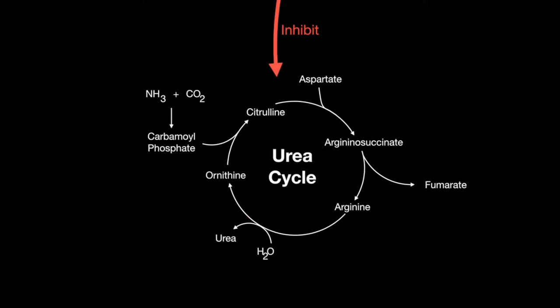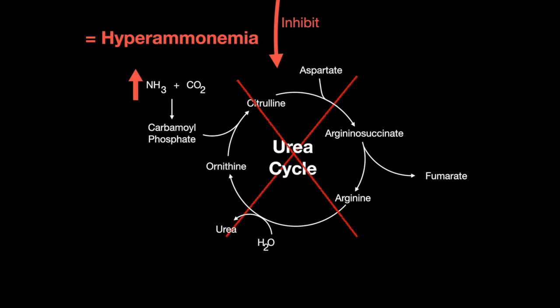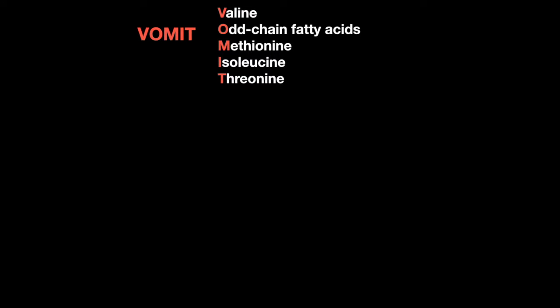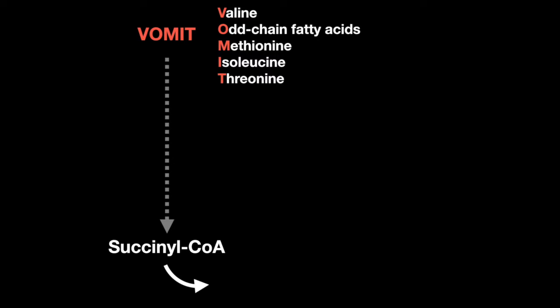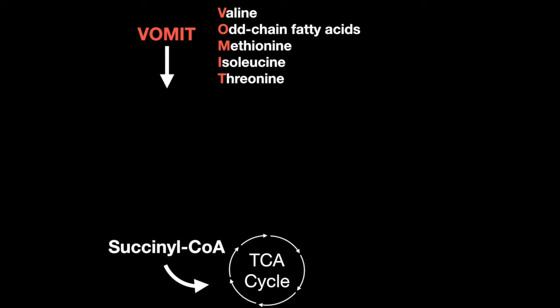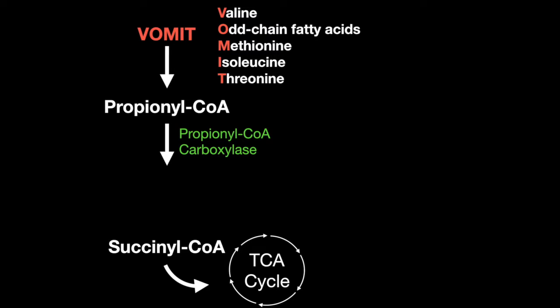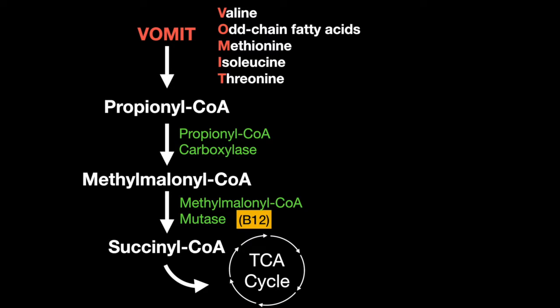The urea cycle is inhibited, which also causes hyperammonemia. Valine, odd-chain fatty acids, methionine, isoleucine, and threonine can be metabolized to enter into the TCA cycle at succinyl-CoA. To get there, they are first turned into propionyl-CoA, and then by propionyl-CoA carboxylase they are turned into methylmalonyl-CoA. Methylmalonyl-CoA mutase, with the cofactor cobalamin B12, turns it into succinyl-CoA, where it can enter.